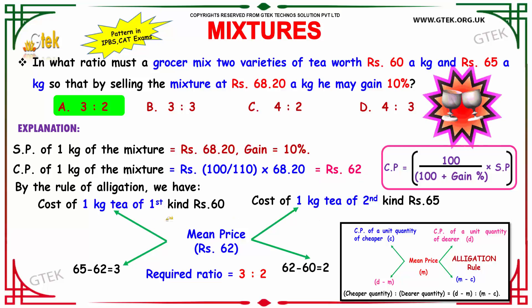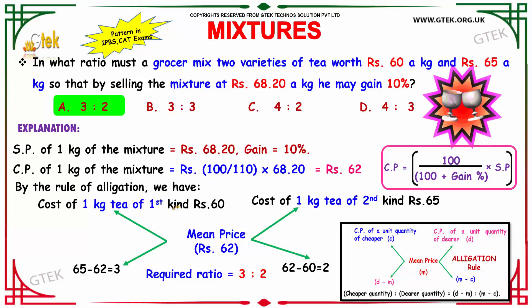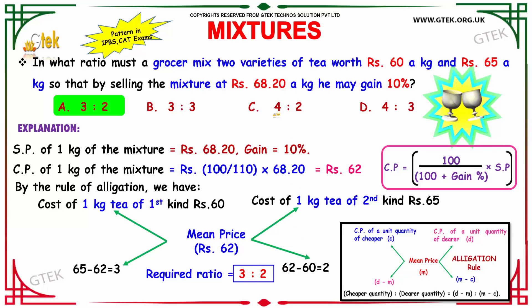So the cost of 1 kg of tea of the first kind is Rs.60, and the mean price is Rs.62.20 paise. Applying the allegation rule, Rs.65 minus Rs.62.20 gives Rs.2.80, and the mean price minus the cheaper price is Rs.62.20 minus Rs.60, which equals Rs.2.20. So the required ratio is Rs.2.80 is to Rs.2.20, which simplifies to 3 is to 2. Hence our answer is option A, 3 is to 2.